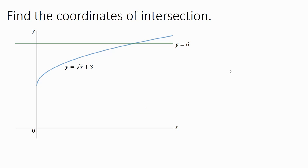Last example here. We're given a graph with no numbers on it. We've got this function that starts right here. Looks like it has a y-intercept at 3. And then it kind of just goes up here and we've got the line y equals 6. So this is 6 and it's just a constant line.